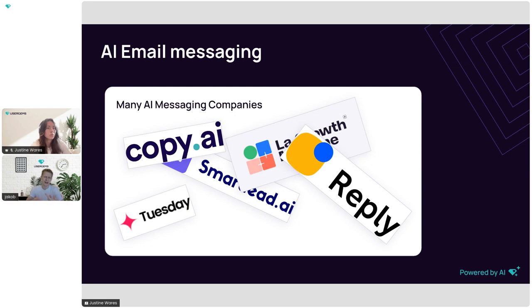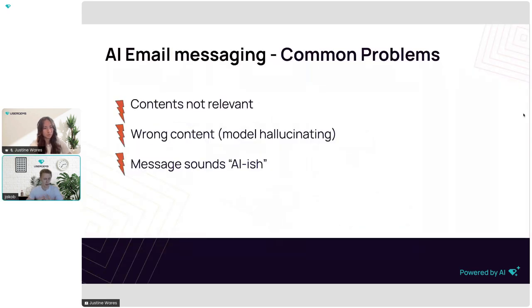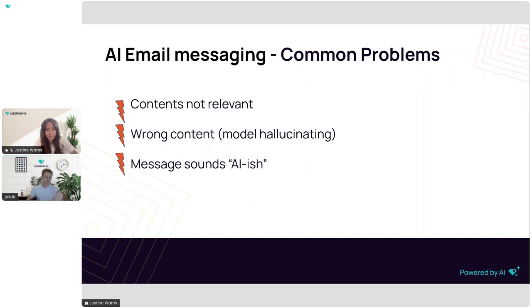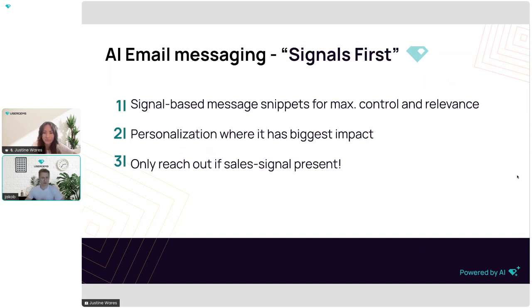If you've tried some of these AI email tools, you quickly realize they share common problems: personalized content is often not really relevant, or in the worst case the model is hallucinating. Another common issue is that messages sound AI-generated — noticeably 'AI-ish.' To mitigate these problems, we developed our own AI messaging tool at UserGems.